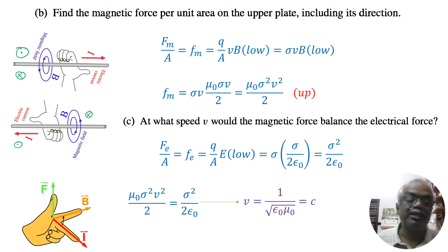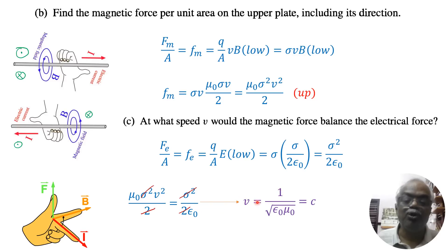Cancelling common terms: the 2's cancel and sigma squared cancels. Bringing mu-naught to the other side gives V squared equals 1 over mu-naught epsilon-naught. Taking the square root, V equals 1 over the square root of epsilon-naught mu-naught, which is nothing but the velocity of light. So it is very difficult to achieve the speed of light, and naturally the electric force will be dominant. This is practically not possible.